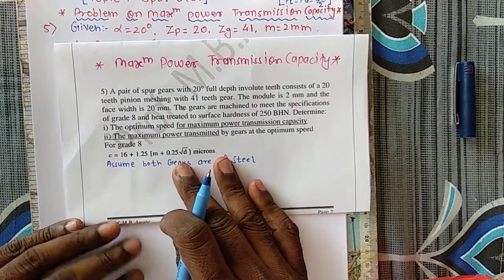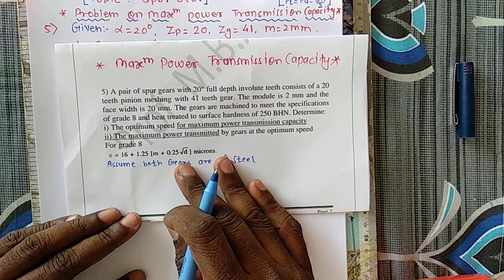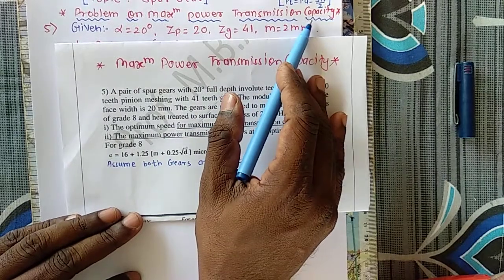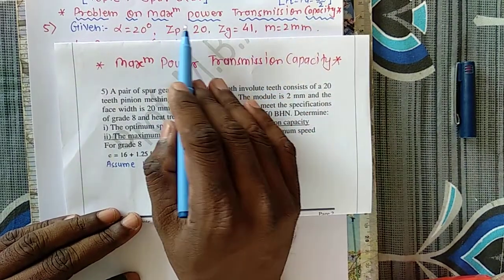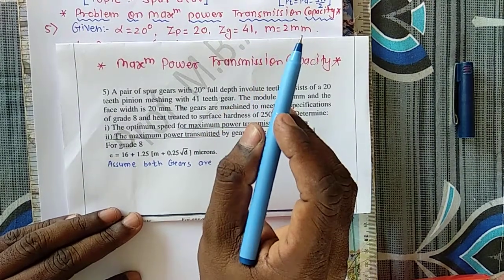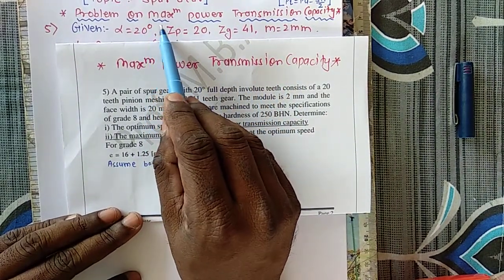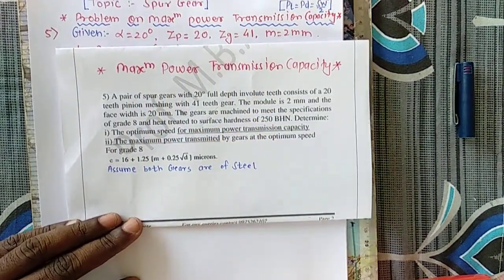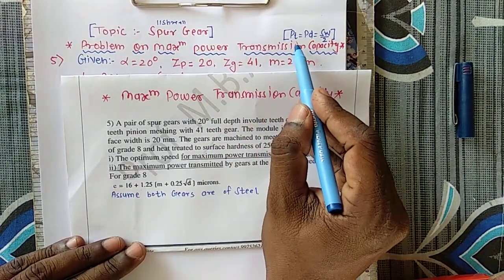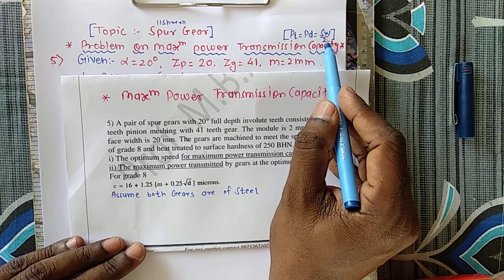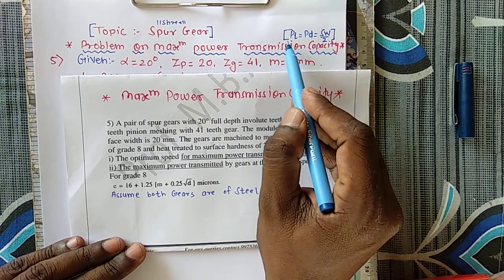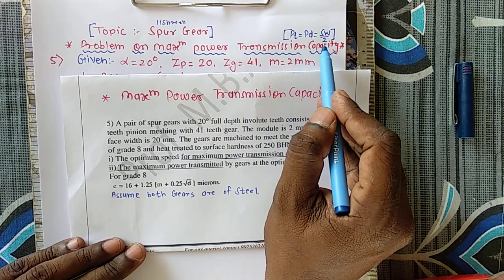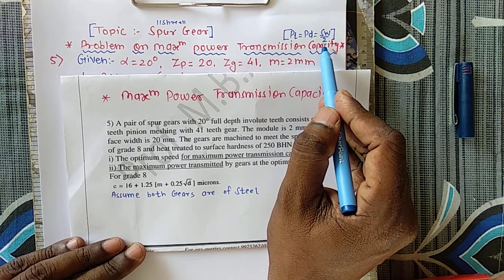Hello everyone, I am Professor Mallika Arjunaute. Today's point of discussion is problems on maximum power transmission capacity of the gear, also known as design for maximum power transmission capacity. Whenever the word 'maximum power transmission capacity' comes in a problem, we have to use the equation PT = PD = SW/2. To see how this equation is derived, go through my lecture on derivation for maximum power transmission capacity.